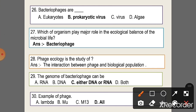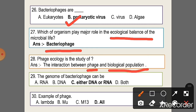Question 26: Bacteriophages are — option B, prokaryotic viruses. Question 27: Which organism plays a major role in the ecological balance of microbial life? Answer: bacteria. Question 28: Phage ecology is the study of the interaction between phage and biological populations. Question 29: The genome of a bacterial phage can be — option C, either DNA or RNA. Question 30: Examples of phage — option D, all: lambda phage, mu phage, and M13 phage.